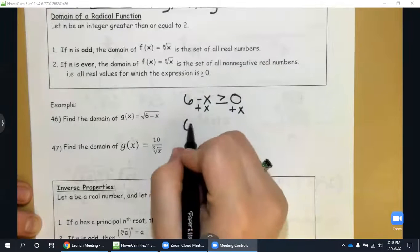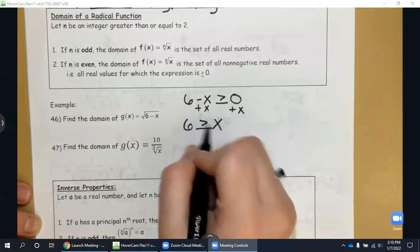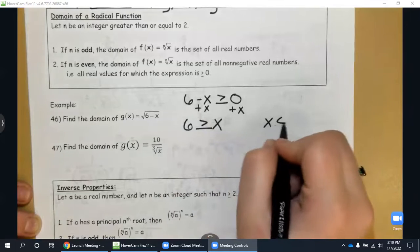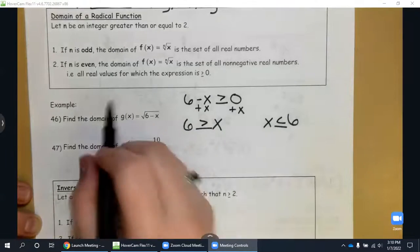And so x has to be less than or equal to six. I'm going to rewrite that so that it's reading from left to right. X is less than or equal to six, that's the domain for 46.